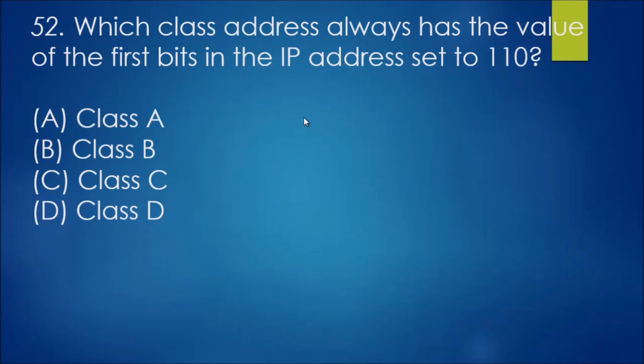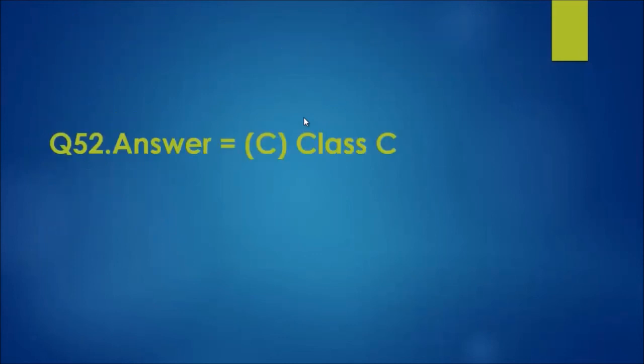Question 52: which class address always has the value of the first bits in the IP address set to 110? What we're going to realize here is class C addresses always have the first three bits set to 110. This means that class C addresses range from 192 to 223, so class C is the answer there.